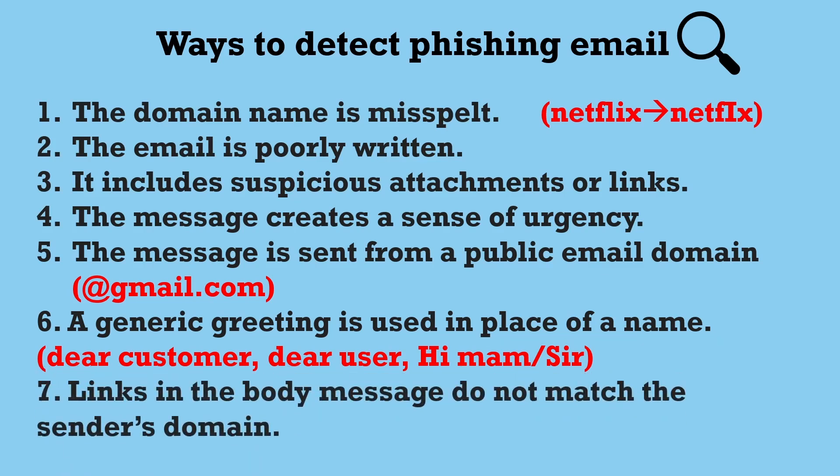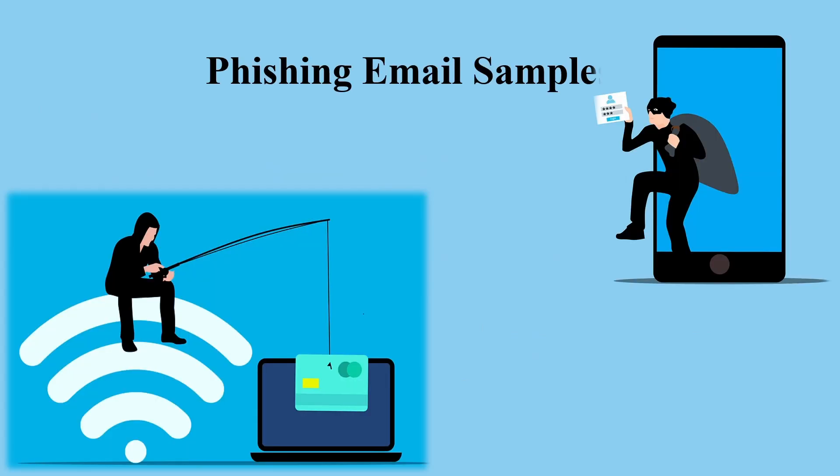Number seven is links in the body message do not match the sender's domain. We'll see this example in our phishing email samples. So always check the link in the email — just hover over the link and check the address, and check whether it is an HTTPS site or HTTP site. That is a very important tip. So now let's see some phishing email samples so you will understand it more.